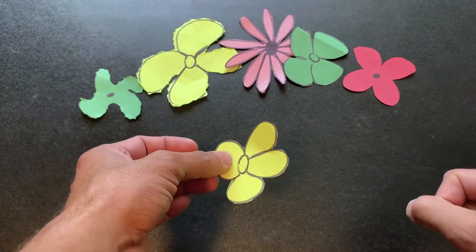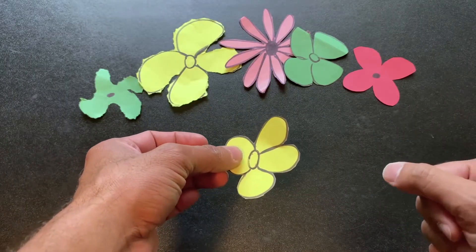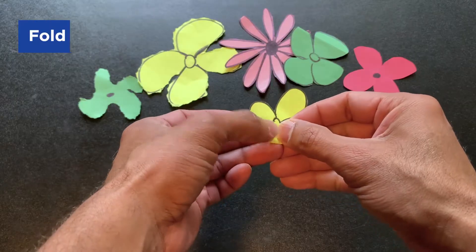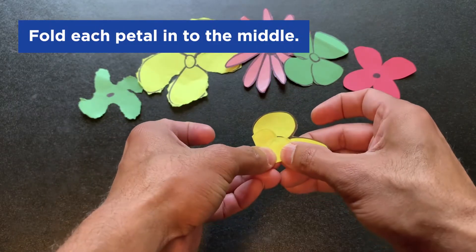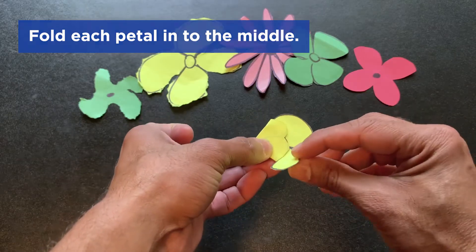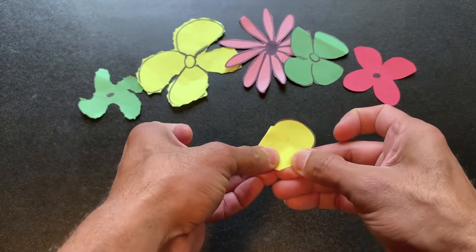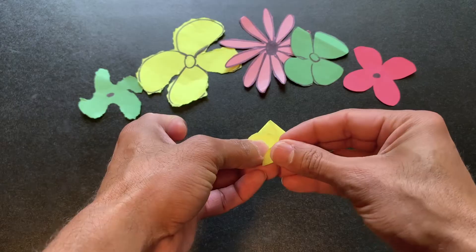Now to set it up, you're going to take each petal and fold it into the middle of the flower. As you take each petal, they're going to overlap as you fold it into the middle of the flower. So just do that all the way around your flower, and fold in each one of the petals to the middle.